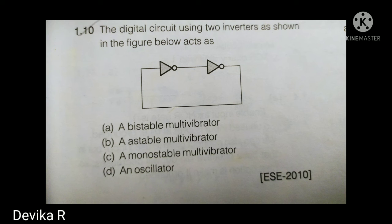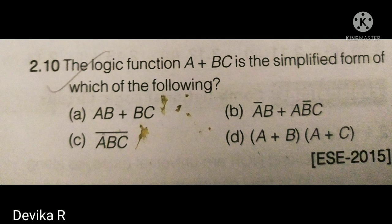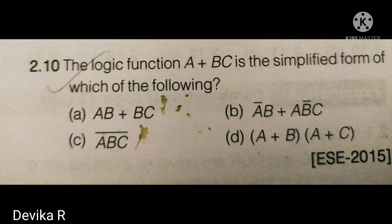The next question: the Boolean function A + BC is the simplified form of which of the following? The correct answer is (A + B)(A + C). If you multiply and expand that, you get A + BC. This is an important Boolean identity — the expanded form of A + BC is (A + B)(A + C).